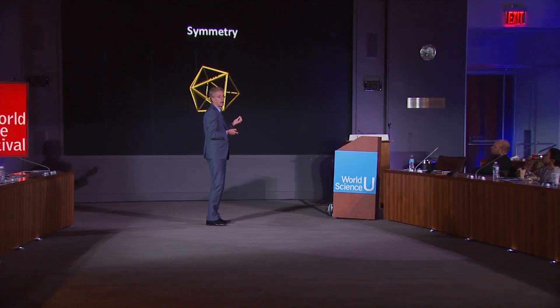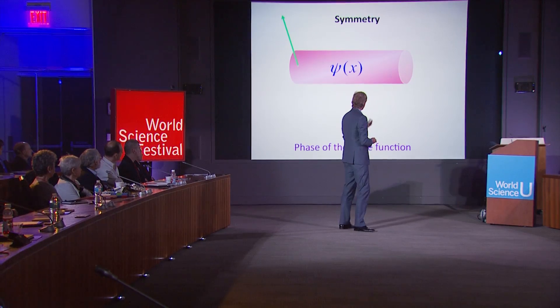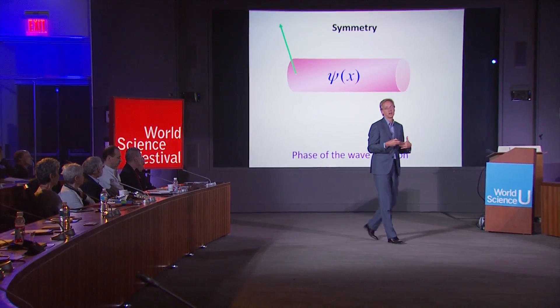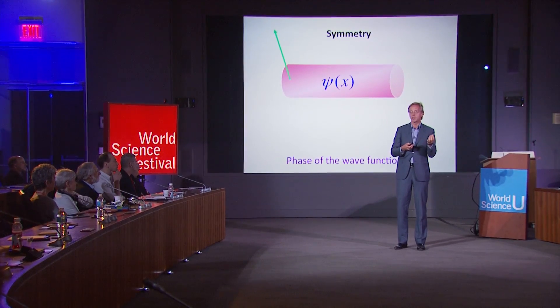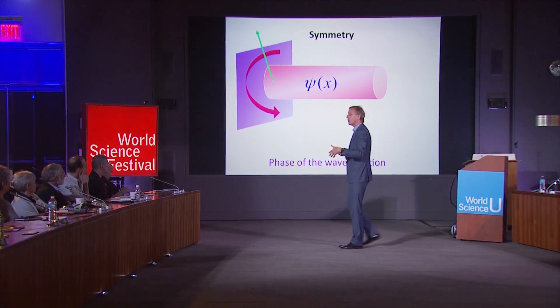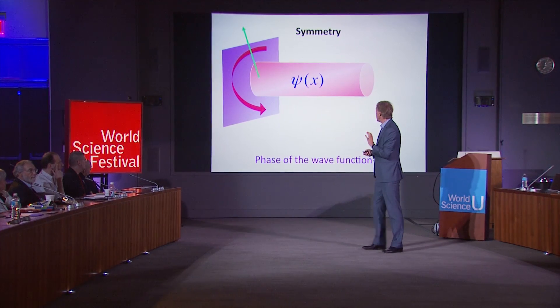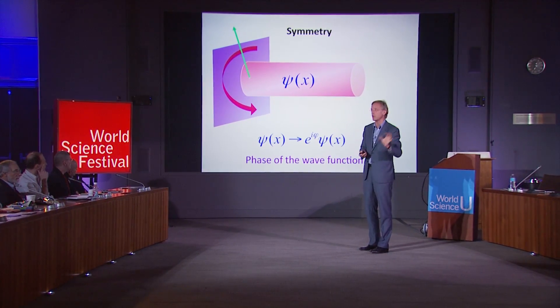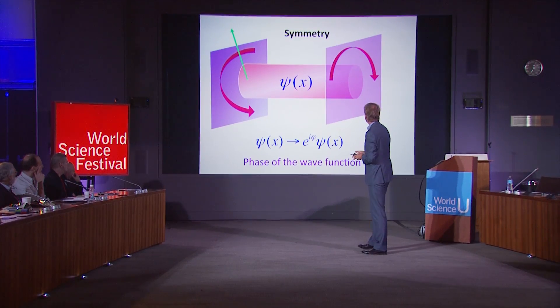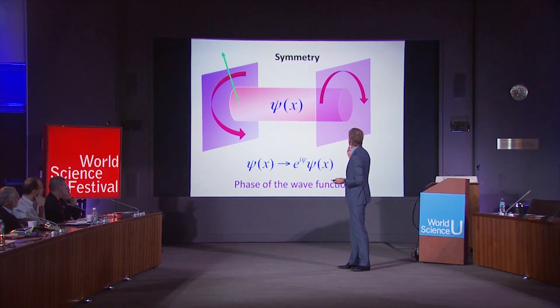Another element underpinning particle physics, apart from the nature of space and time and particles going up and down, is the concept of symmetry — we're basically back to the old Greeks, with symmetry as the unifying principle underlying all of modern physics. Going back to quantum mechanics: a particle is described by a wave function. Technically, this is a complex function with a phase — you can rotate the wave around in complex space, add a complex number of unit length, and this would not be visible. There's a kind of symmetry that's invisible. You can do this at any point in space-time — what we call a gauge symmetry.